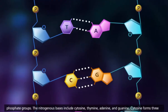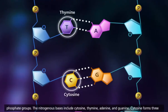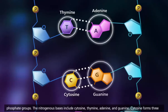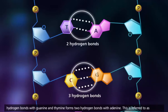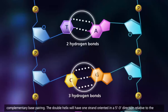The nitrogenous bases include cytosine, thymine, adenine, and guanine. Cytosine forms three hydrogen bonds with guanine, and thymine forms two hydrogen bonds with adenine. This is referred to as complementary base pairing.